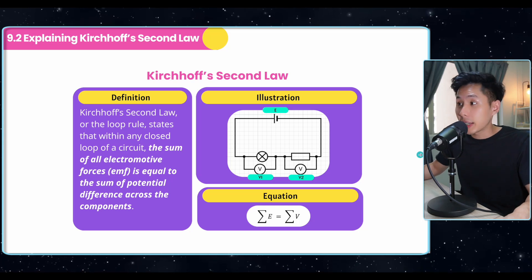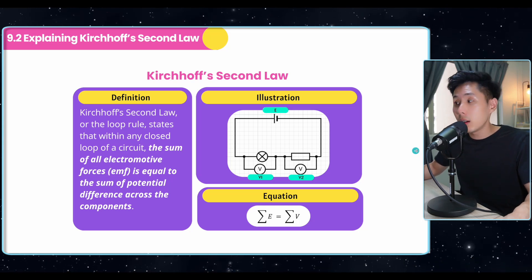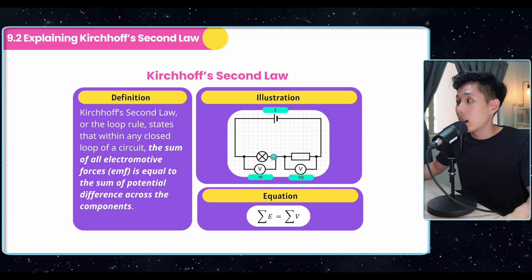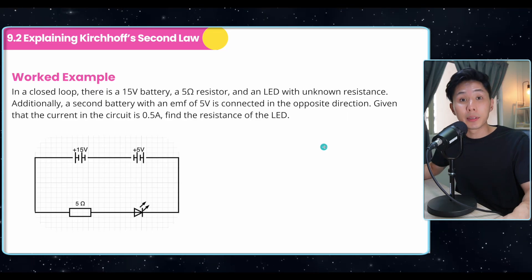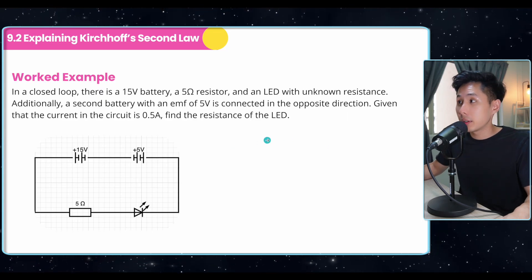Now let's move on to Kirchhoff's second law. This is also a very simple law. It states that the potential difference across each component in a circuit will be equal to the source EMF. So to explain further, I have another example here.